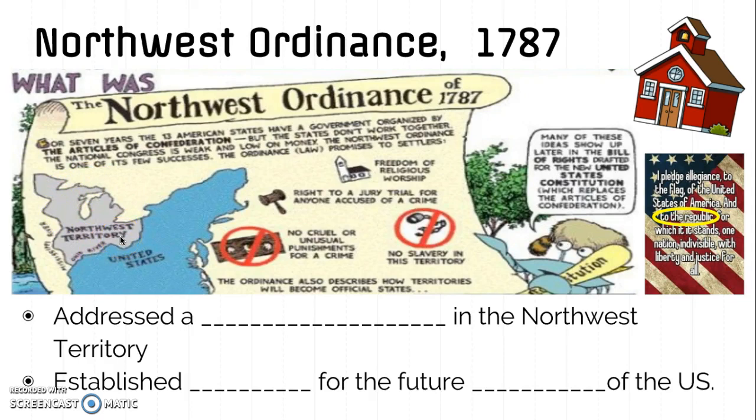Number two: the Northwest Ordinance established a need for education and federal funding for education. It states that every township should have a school, and so since the Northwest Ordinance required schools, it also established a basis for national or federal aid for education. We see the national government giving money to schools for the first time so they can operate.